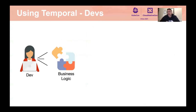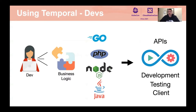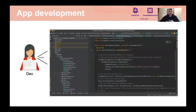Using the Temporal SDKs, we write applications in different languages: Go, PHP, Node.js, and Java. Each SDK provides APIs for workflow development, testing, and client interaction. Because Temporal takes a programmatic approach rather than a DSL or high-level workflow language, we write code in our favorite IDE without having to change our programming language or development environment.